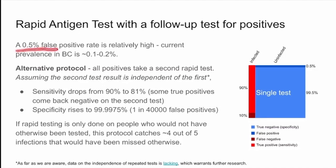The 0.5% false positive rate associated with 99.5% specificity is problematic because typical prevalence in BC is around 0.1–0.2%. That's been changing with Omicron, but in that type of circumstance you'd be getting five times as many false positives as true positives, which means putting a whole bunch of people through isolation and confirmatory PCR tests. An alternative protocol has been proposed: anybody who tests positive on a rapid antigen test will take a second rapid test.